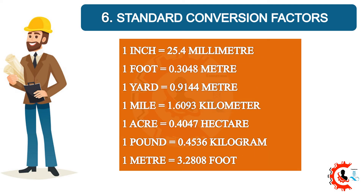Six: standard conversion factors. 1 inch = 25.4 mm. 1 foot = 0.3048 m. 1 yard = 0.9144 m. 1 mile = 1.6093 km. 1 acre = 0.4047 hectare. 1 pound = 0.4536 kg. 1 meter = 3.2808 feet.